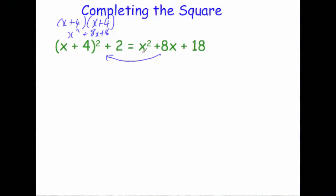First of all, because it's x squared you put an x down, and then you look at the next term — the x term. Because the coefficient, the number in front of it, is 8, you halve it and write plus 4. If it was plus 6x you'd write plus 3 in the bracket; if it was minus 10x you'd write minus 5 in the bracket. Then you put squared. So we've done the first part: x plus 4, all squared.